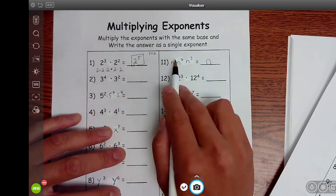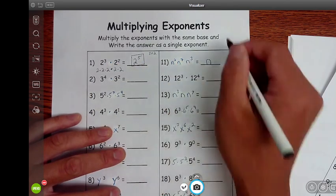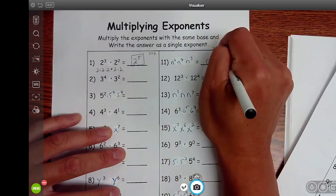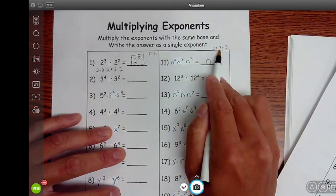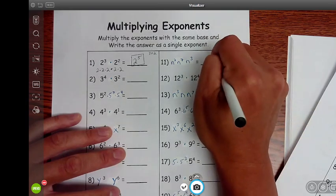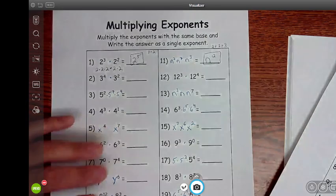3 plus 2. Here we're doing 2 plus 7 plus 3. 2 plus 7 is 9. 9 plus 3 is 12. So that would just be N to the 12th.